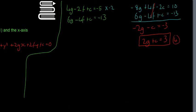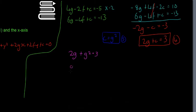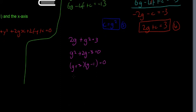We also know from equation 3 that c = g². Substituting into equation 4: 2g + g² = 3, which rearranges to the quadratic g² + 2g − 3 = 0. Factorising: (g + 3)(g − 1) = 0, so g = −3 or g = 1. Those are our two values of g.